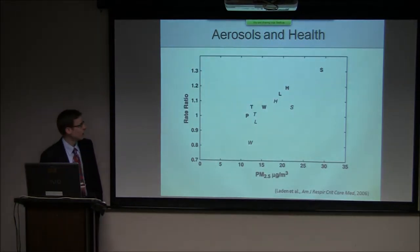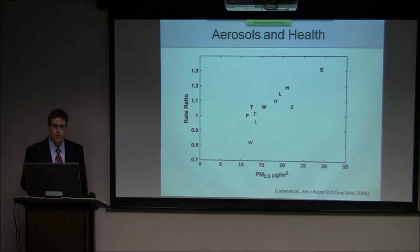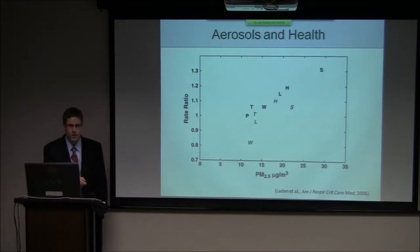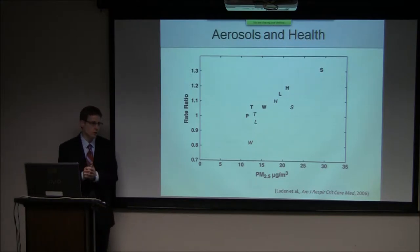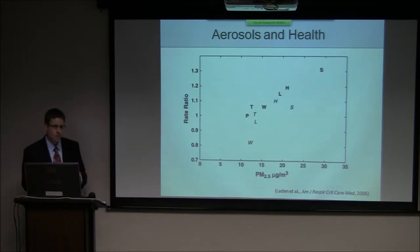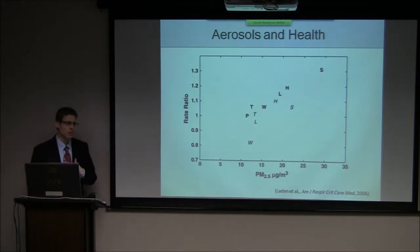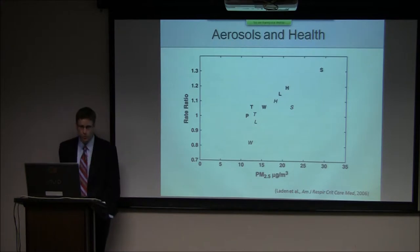Starting with aerosol effects on human health. This shows data from the original Harvard Six Cities study from 1993, along with updated data from the same six cities. It shows a normalized mortality rate on the y-axis and PM2.5 mass concentration on the x-axis, where each symbol represents data from one city. PM2.5 refers to the mass concentration of all particles smaller than 2.5 micrometers. The EPA regulates particles in this size range because they can penetrate the deepest portions of our respiratory system. There is a strong relationship between mortality and PM2.5 concentrations.